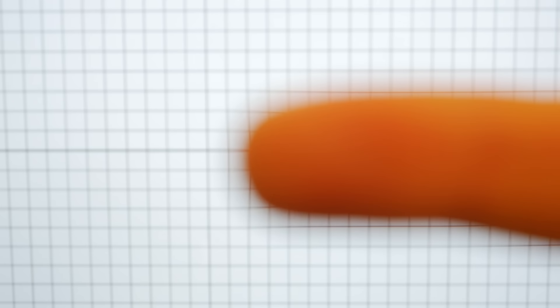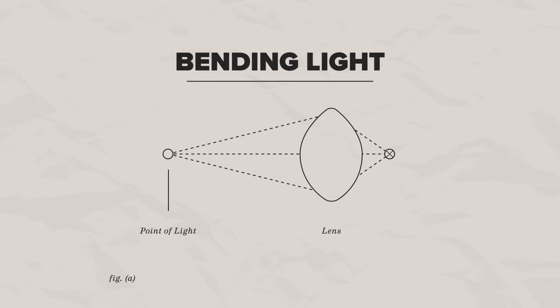It has to do with what happens when light passes through a lens in your eye or in a camera. Take any point out here in front of the lens. Light reflects off that point, spreads out, passes through the lens, and is bent toward a different point behind the lens. The spot where the light comes together is called the focal point.